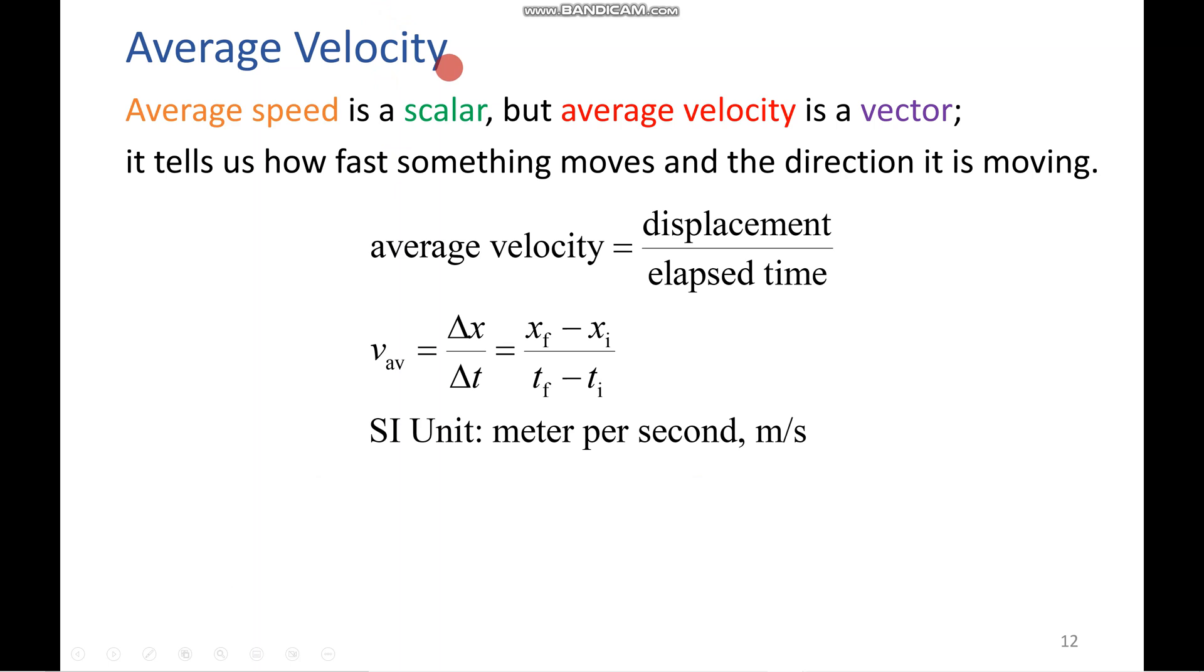Alright, let's wrap up with velocity. We should all know the definition. It tells us how fast something moves in the direction it's moving. And we can also see it mathematically here with average velocity equals displacement over elapsed time. And then we see it with the notation we mentioned earlier, delta x over delta t. Your x final minus x initial over t final minus t initial. As opposed to speed, you should know that average velocity is a vector.